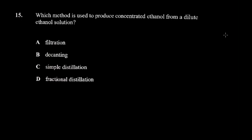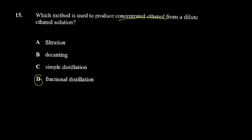The next question asks which method is used to produce concentrated ethanol from a dilute ethanol solution. Separation techniques is a very popular topic in Paper 1. The options include filtration — which separates solid-liquid mixtures — decanting, simple distillation, and fractional distillation. Fractional distillation is the correct answer.